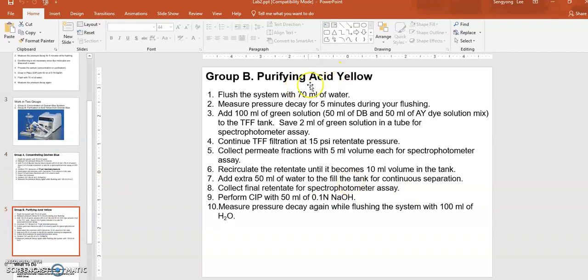For acid yellow purification from the dye mixture (green solution): same initial steps - washing and pressure decay observation. Start with 100 ml of green mixture (50 ml dextran blue and 50 ml acid yellow mixed). Save 2 ml for spectrophotometry assay. Start TFF filtration at 15 psi. Collect permeate fractions (5 ml each, multiple fractions). Acid yellow should come out as permeate because the small molecule goes through the TFF filter membrane. You will see acid yellow being separated and recovered from the permeate tubing.